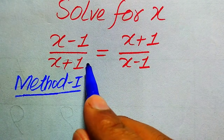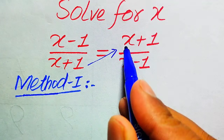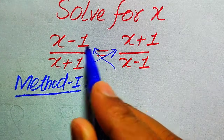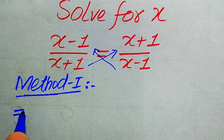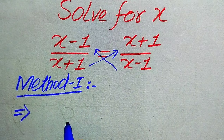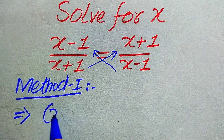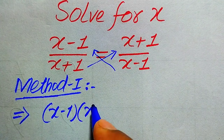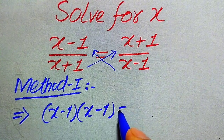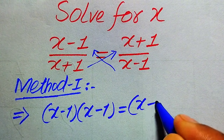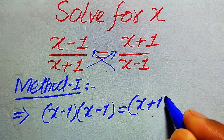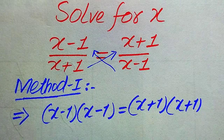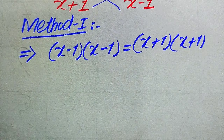We multiply (x + 1) to the left term and (x - 1) to the right term. After cross multiplication, we get: (x - 1)(x - 1) = (x + 1)(x + 1).